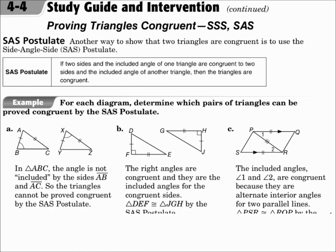Another way to show that two triangles are congruent is the Side-Angle-Side postulate, or SAS. If two triangles have two pairs of congruent sides and the angle between them, then they're congruent. Please make sure the angle you use is the angle between the two sides — just like it's written: SAS. The A is between the two S's, and the angle you use has to be between the two sides.